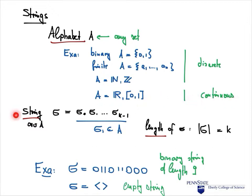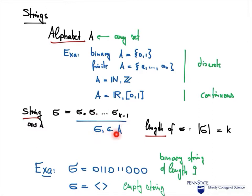A string over an alphabet A is just a finite sequence of symbols over that alphabet. We denote strings by Greek letters like sigma, tau, and so on. A string is written as sigma_0, sigma_1, up to sigma_{k-1}, where each sigma_i is an element of the alphabet. Here k is the length of the string, and the length is denoted by the absolute value symbol.